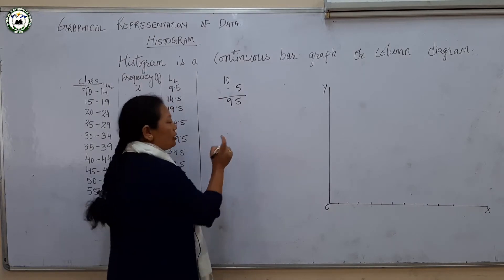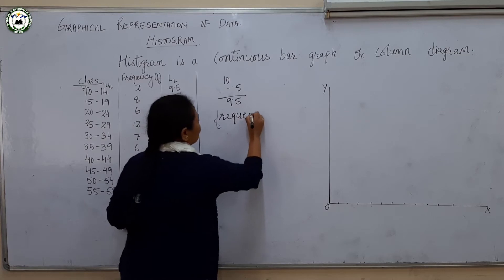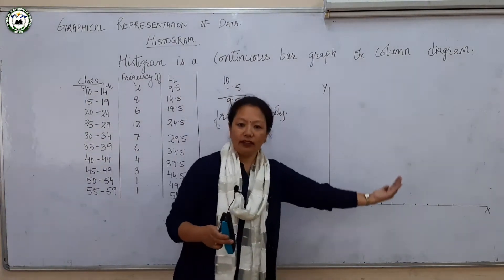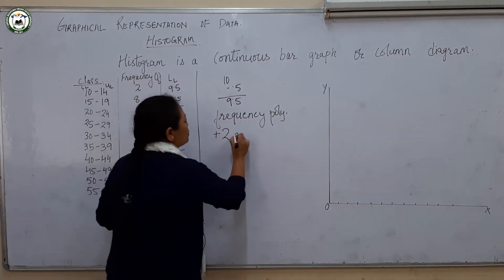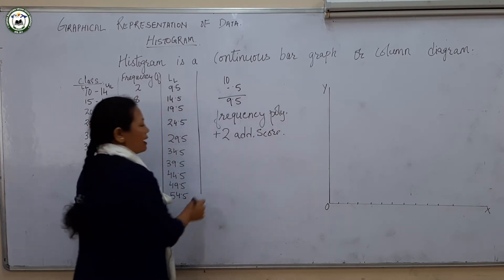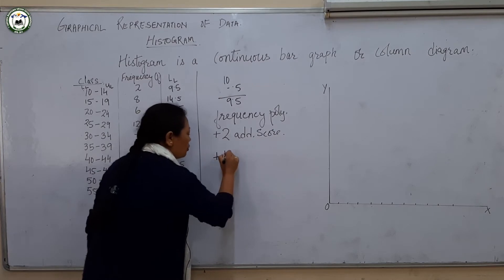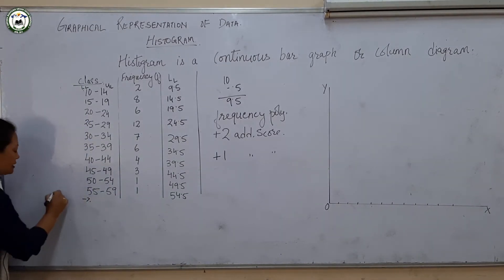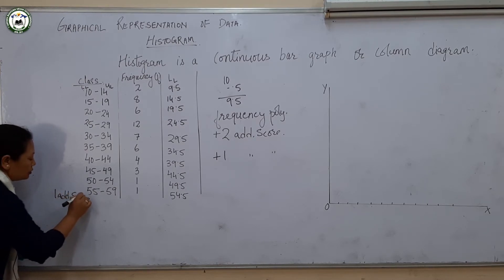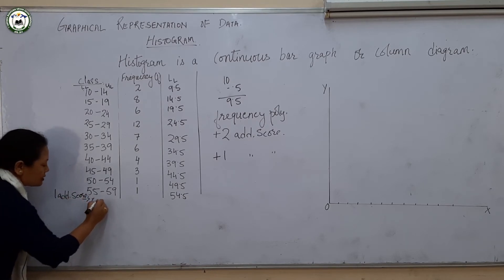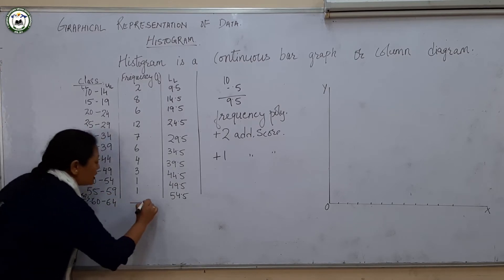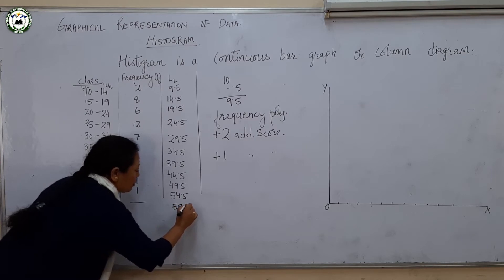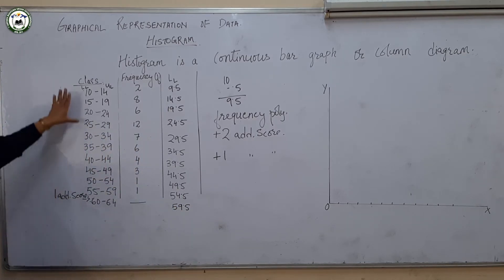Here is one difference. In the frequency polygon you took two additional scores at the beginning and end. In the histogram you take only one additional score. That next score will be 60 to 64. As we do not have any frequencies for it, I will take out the lower limit of that class. The lower limit will be 59.5.